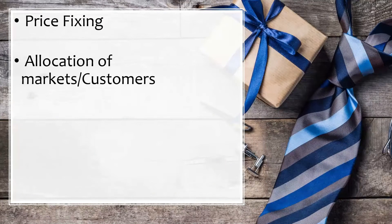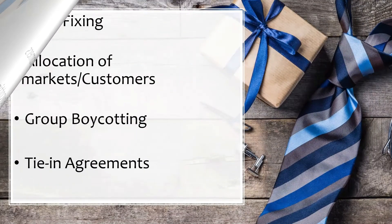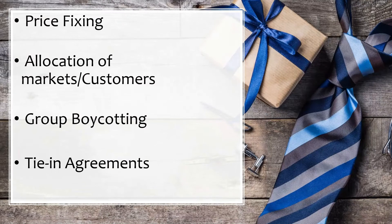Today's reminder covers: what is price fixing, what is the understanding of allocation of customers and markets, group boycotting, and tie-in agreements. When looking at questions on this topic, please remember I am narrowing it down to help someone pass the real estate exam, so I may oversimplify it in order for the content to make sense when you see a question.